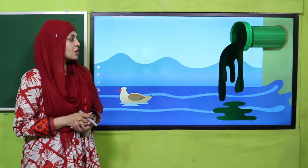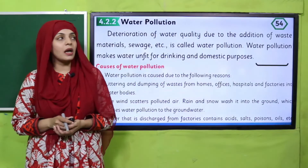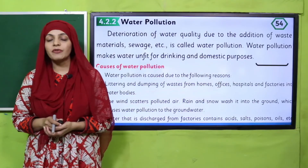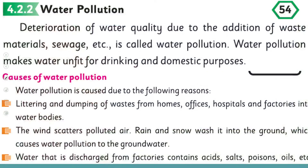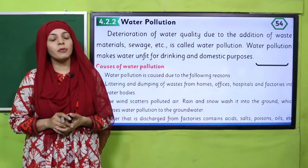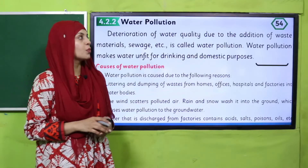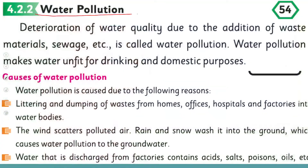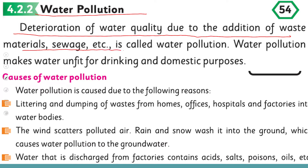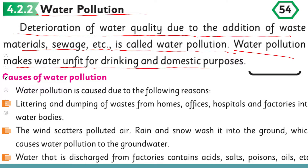Okay my dear students, now let's quickly move forward towards the reading. I request you all to please open page number 54 in your Science 5 books. I hope everybody has done it. Now let's quickly move forward towards the reading. Water pollution: deterioration of water quality due to the addition of waste materials, sewage, etc., is called water pollution. Water pollution makes water unfit for drinking and domestic purpose.